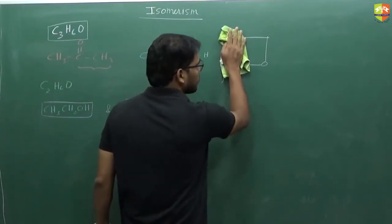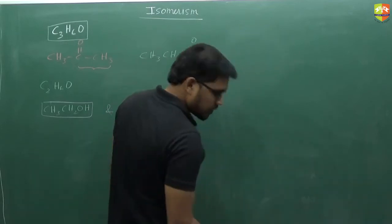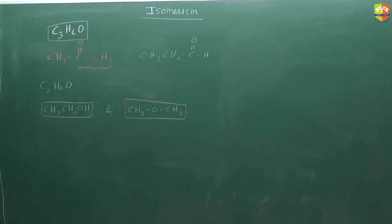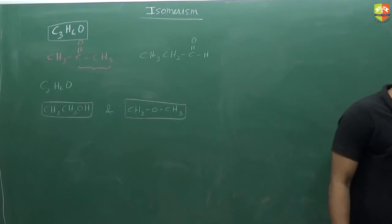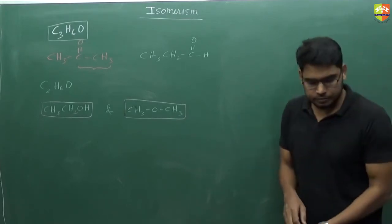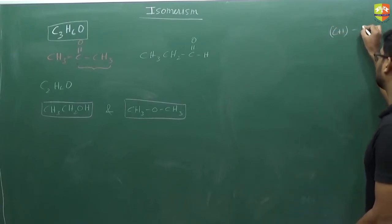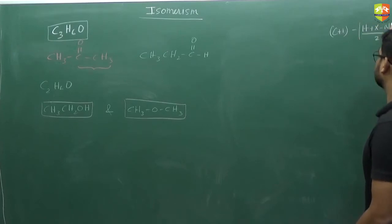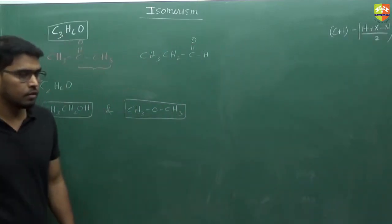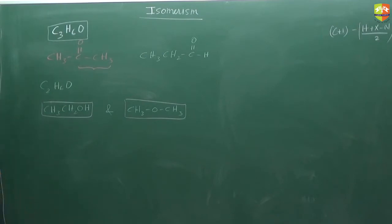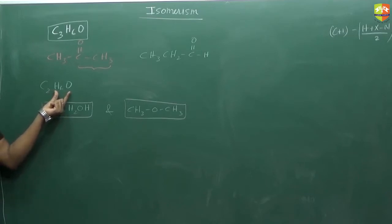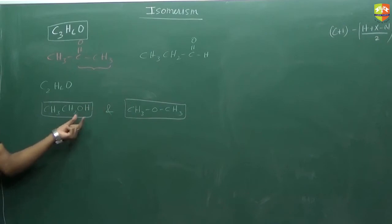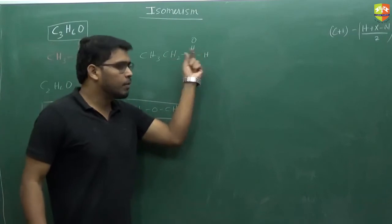So with oxygen, is DOU's formula still the same? Yes. You just keep oxygen as another carbon — you just neglect oxygen. Just take it as carbon, hydrogen, halogen, nitrogen. If oxygen is present, ignore that — it's not required. So what was the formula? C plus one, minus H plus X, minus N, divided by two. For C2H6O, if you calculate DOU you'll get zero. That's why I have drawn the structure where there is no pi bond present — one is alcohol, another one is ether. So this gives you an idea of whether a double bond is present or not in the molecule.